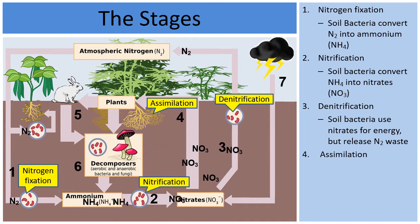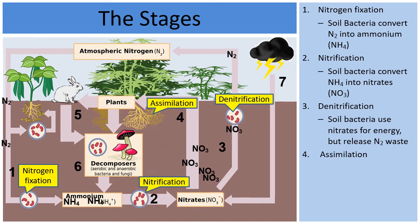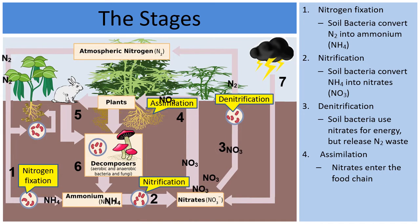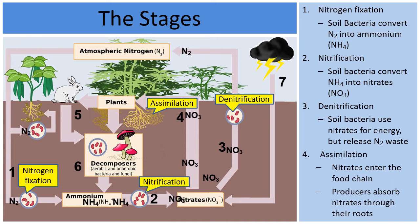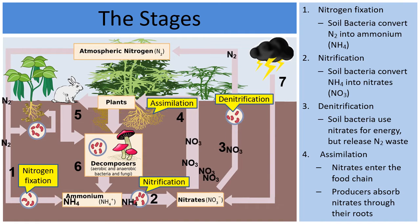In area four, the NO₃ nitrates coming from area two reach a fork in the road — some go into denitrification, and others go into area four. Through the process of assimilation, the NO₃ nitrates are taken up through the roots of plants, and now nitrogen enters the food chain. Producers absorb the nitrogen through their roots, and then it moves up the food chain.